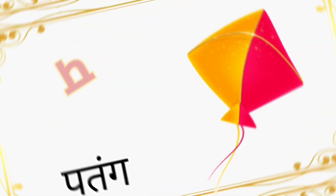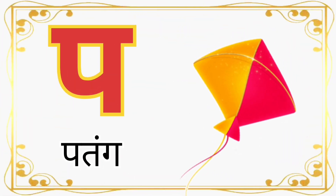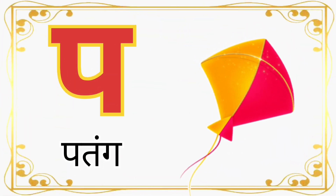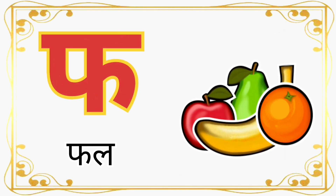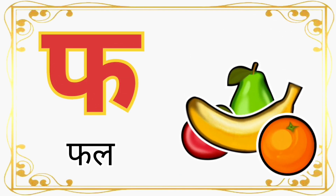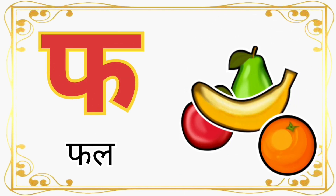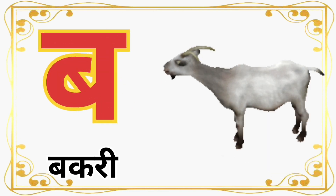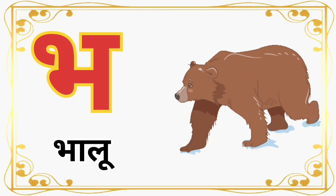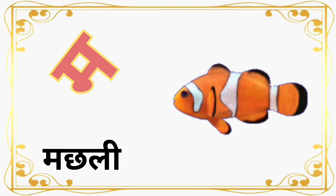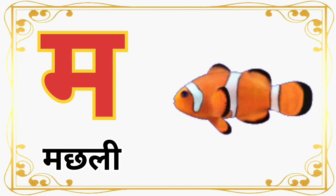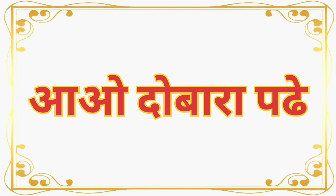प से पतंग (Pa for kite). फ से फल (Pha for fruit). ब से बकरी (Ba for goat). भ से भालू (Bha for bear). म से मछली (Ma for fish).